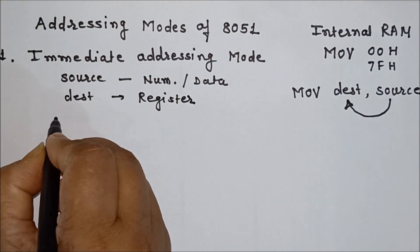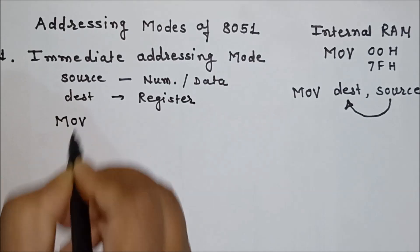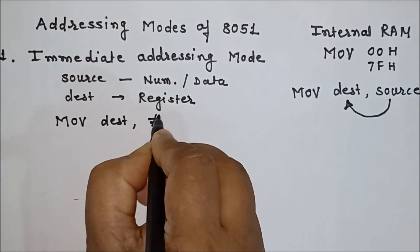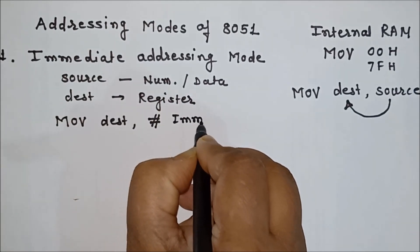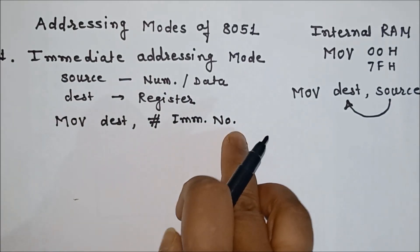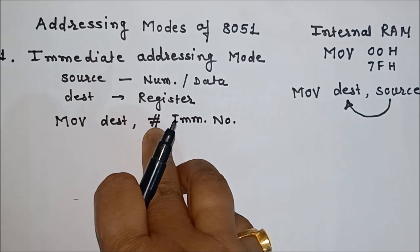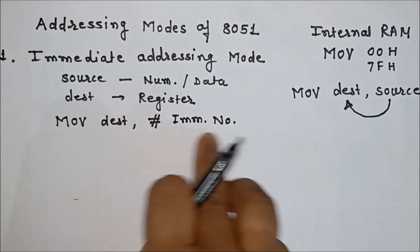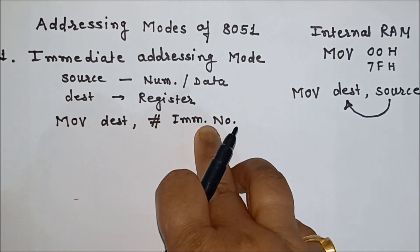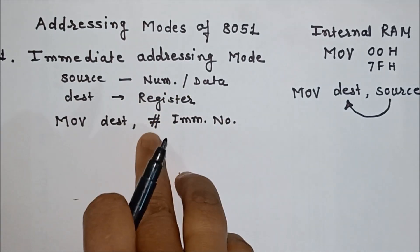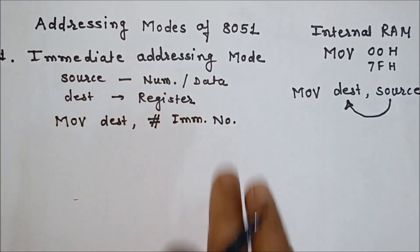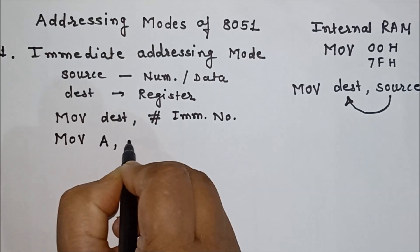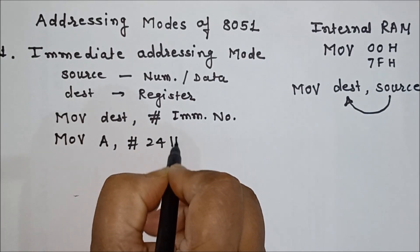The source is data, and the destination can be a register. The standard format can be written as: MOV destination, #immediate_number — that is, data. The hash sign must be written before the data or number. It indicates that it is data, not an address of a memory location. The hash sign is used in immediate addressing mode.